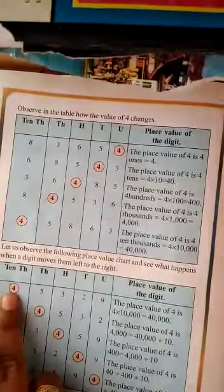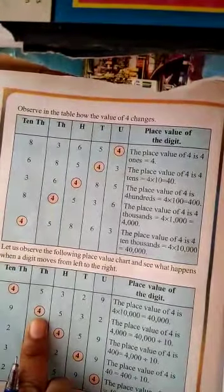Similarly, these also show place value of 4. First one 4 into 10,000, second one 4 into 1000, like that.